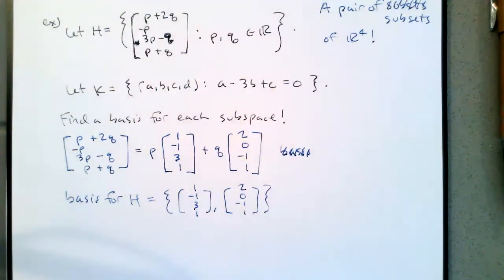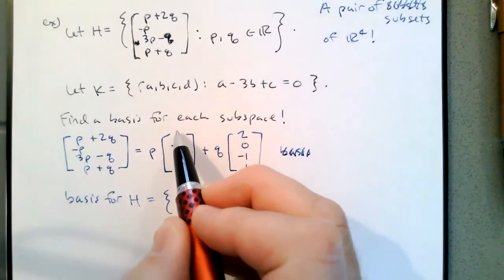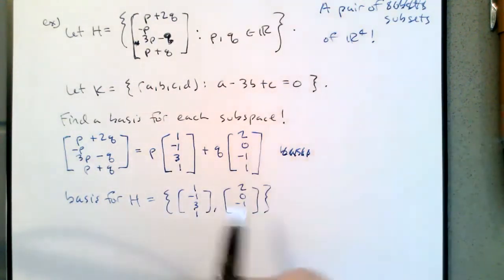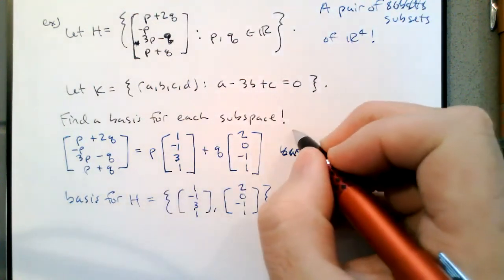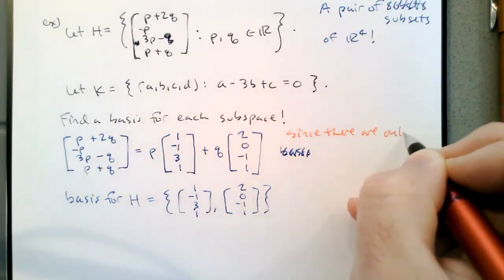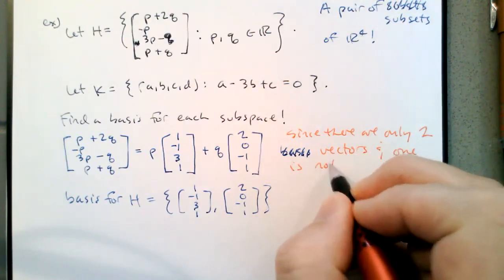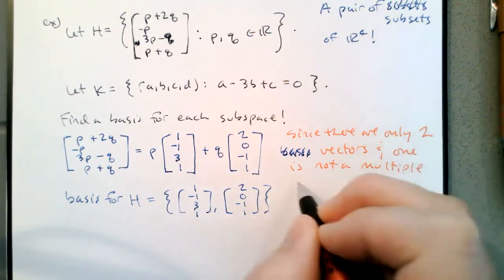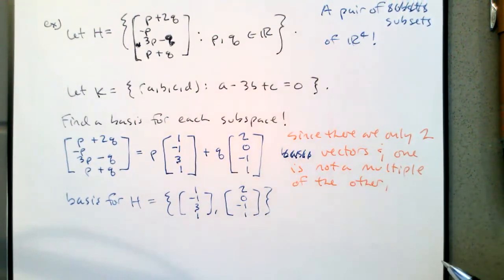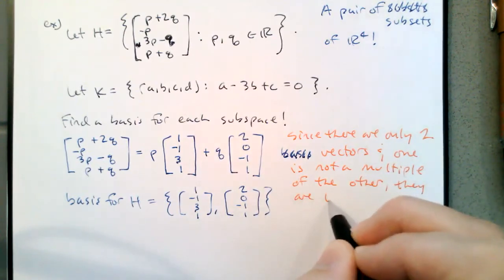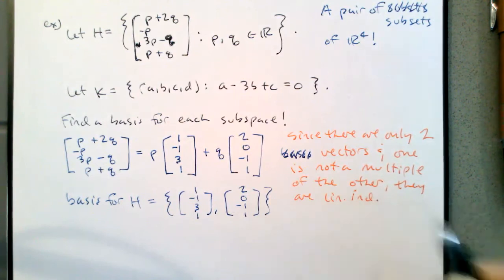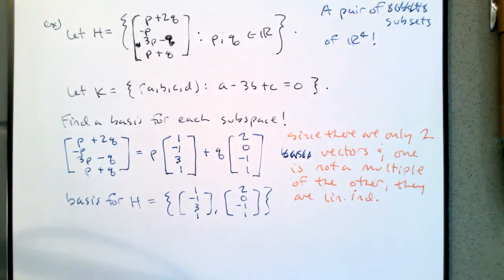A student asks: for the basis, don't we have to find the pivot? If we put these vectors into a matrix, we can see where the pivots are going to be — there's going to be a pivot in the first row, first column, and second row, second column. We have an advantage here because there are only two vectors. Since there are only two vectors and one is not a multiple of the other, the vectors are linearly independent. We only get to use that argument when there are only two vectors.